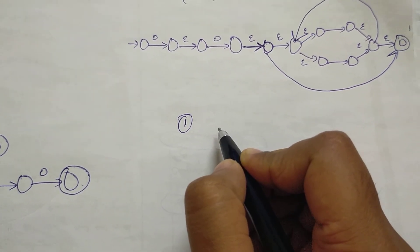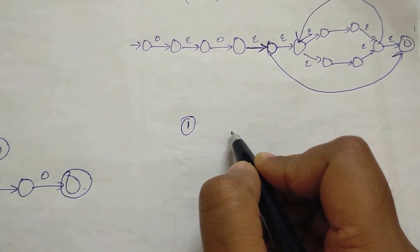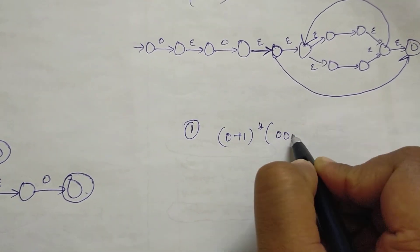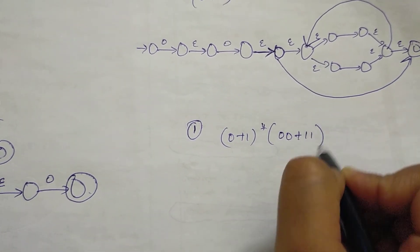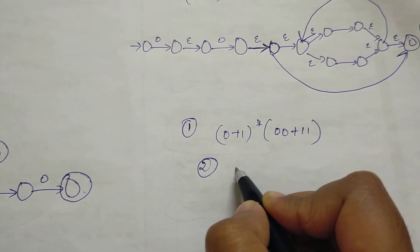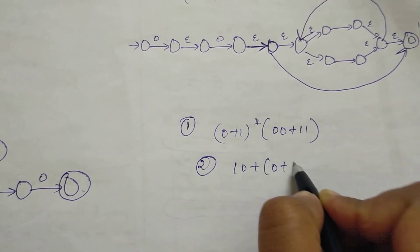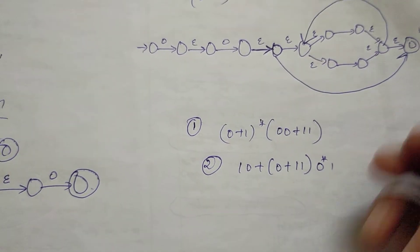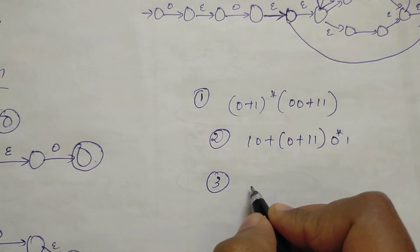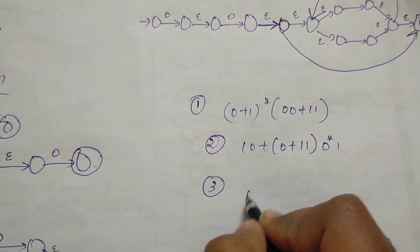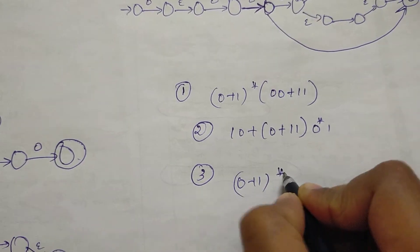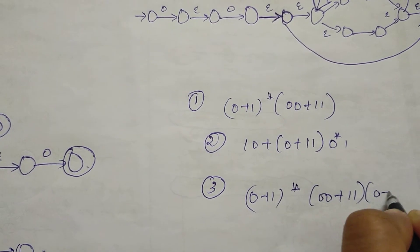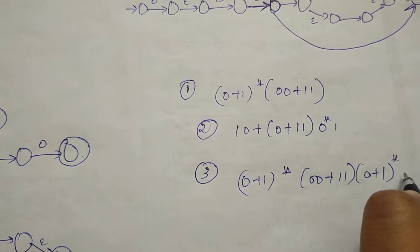Find the Epsilon NFA for the following regular expressions. First question: (0 plus 1) whole star, 0, (0 plus 1), 1. Second question: 1, 0 plus (0 plus 1), 1; then 0 star, 1. Third question: (0 plus 1) whole star, 0, (0 plus 1), 1; then (0 plus 1) whole star, 1.